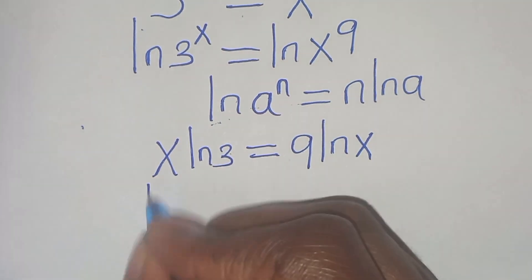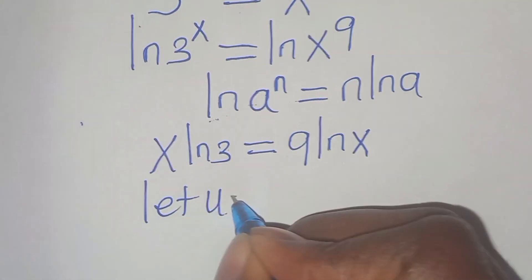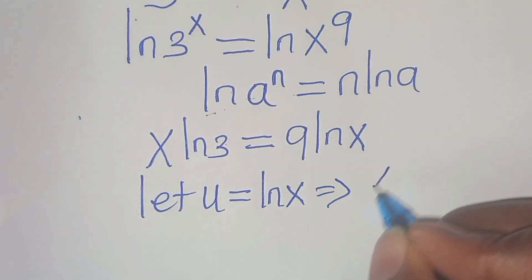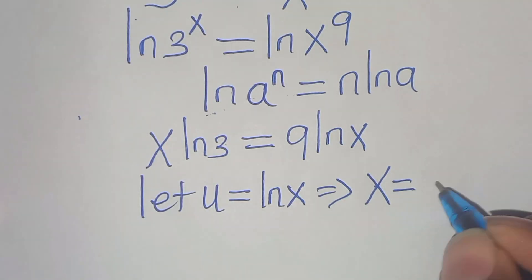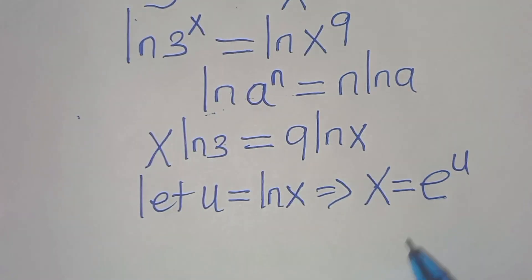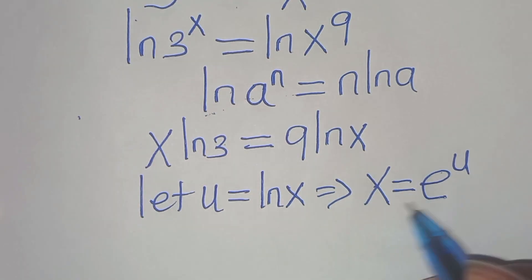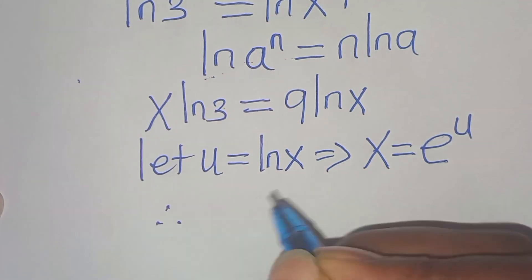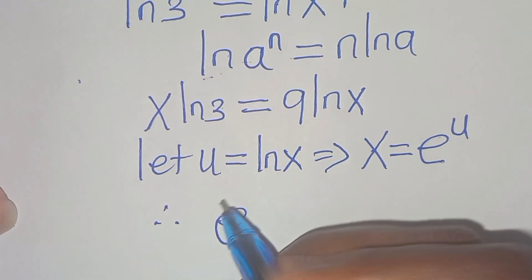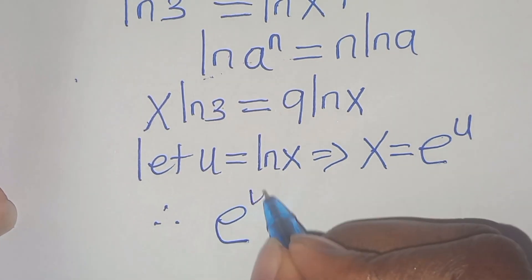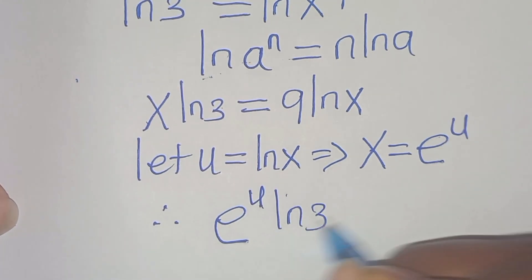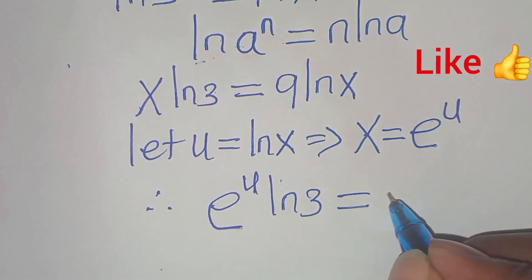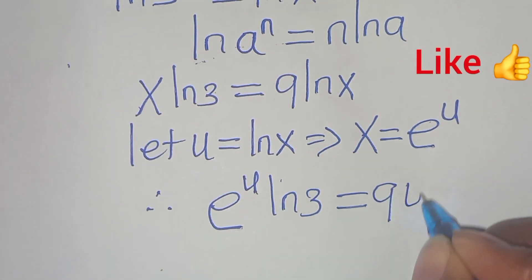The next step: we let u be equal to ln(x), so that x can be expressed as e to the power of u. Remember, u is ln(x), so we can express x as e to the power of u. Substituting here, we have e^u multiplied by ln(3), equal to 9 multiplied by u.